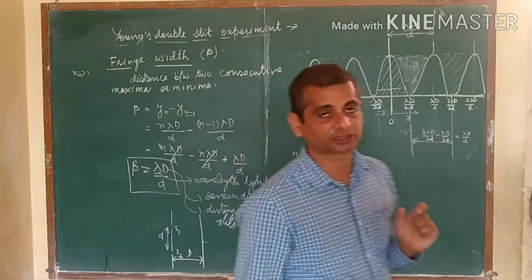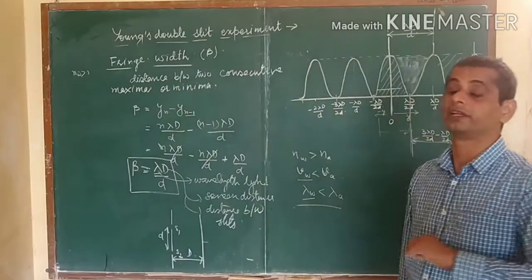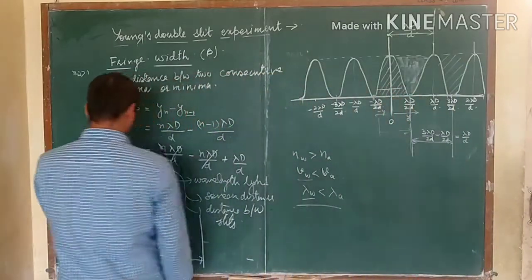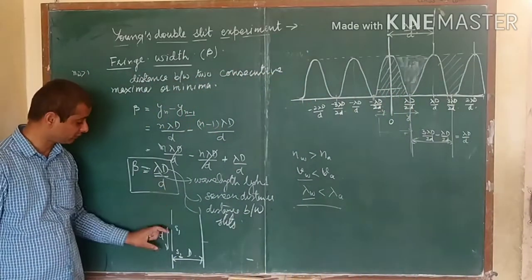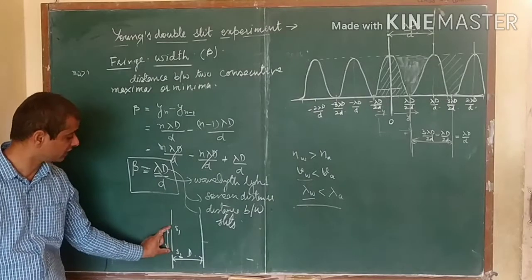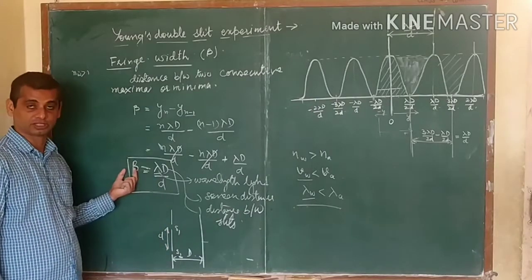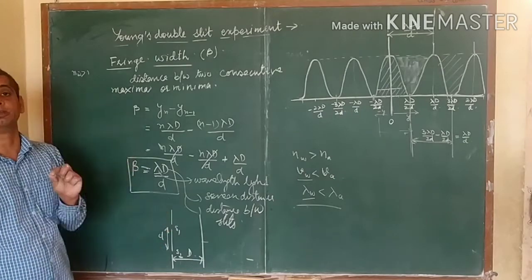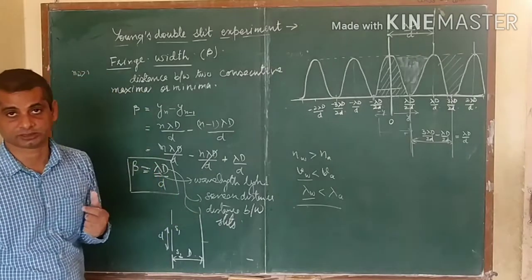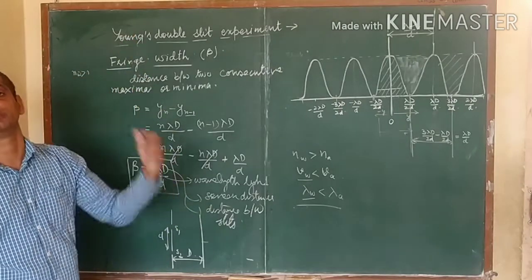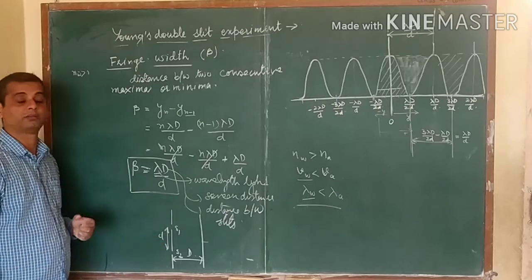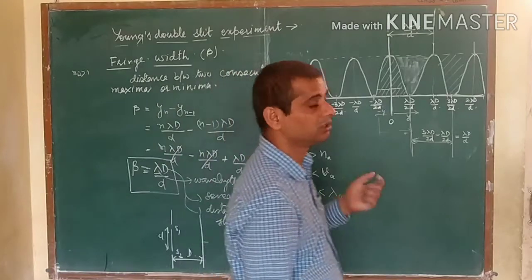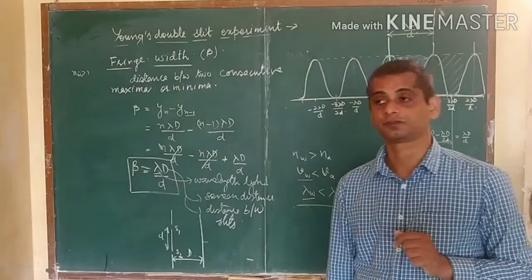But we should not decrease d so much that our interference pattern gets diminished. If you increase the distance between the slits too much, we will not be able to distinguish the fringes — we will have complete illumination of the screen. So by adjusting d, we can control the fringe width. This is all about fringe width in Young's double slit experiment.